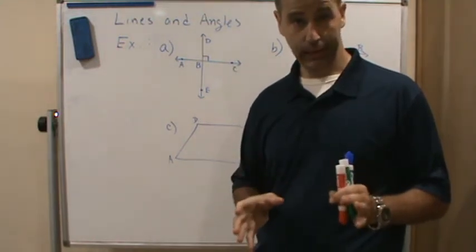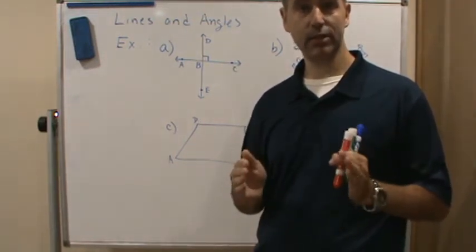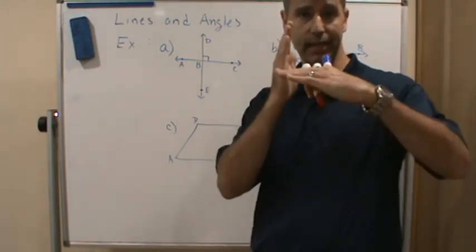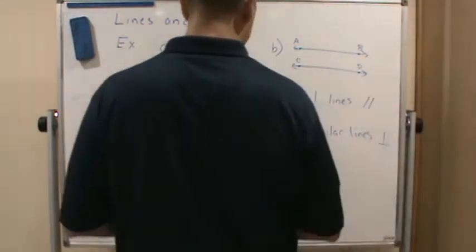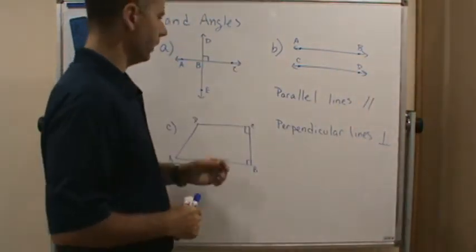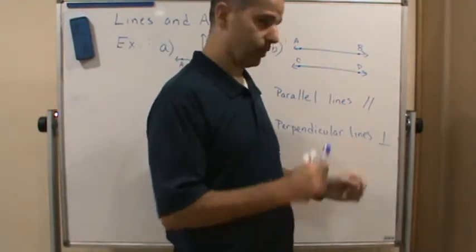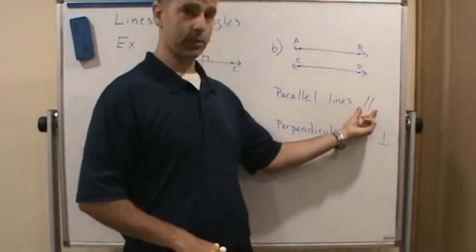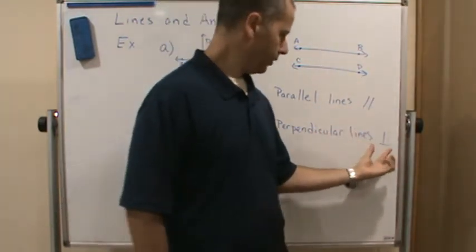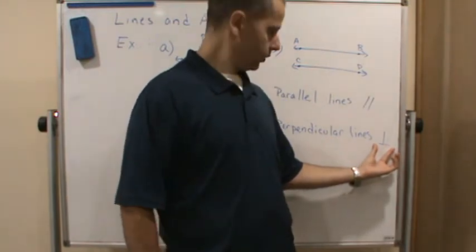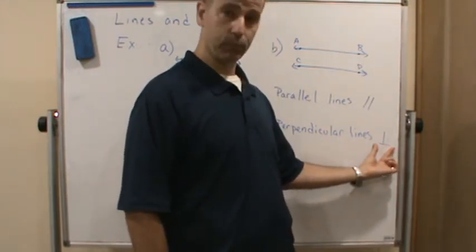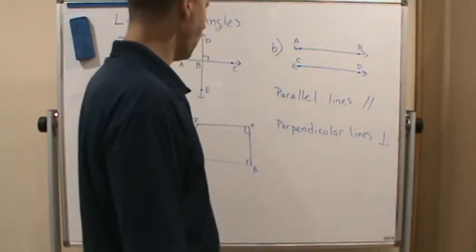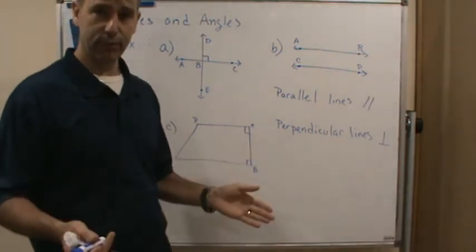Perpendicular lines are lines that intersect, but they intersect creating 90-degree angles. We use this symbol — like two little parallel lines slanted — to represent parallel lines, and we use this symbol — like a little upside-down T — to represent perpendicular.